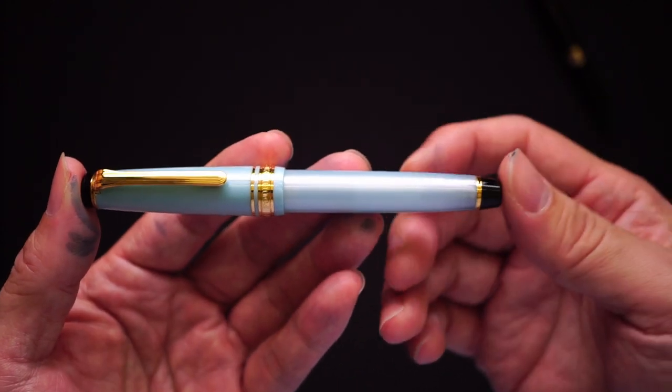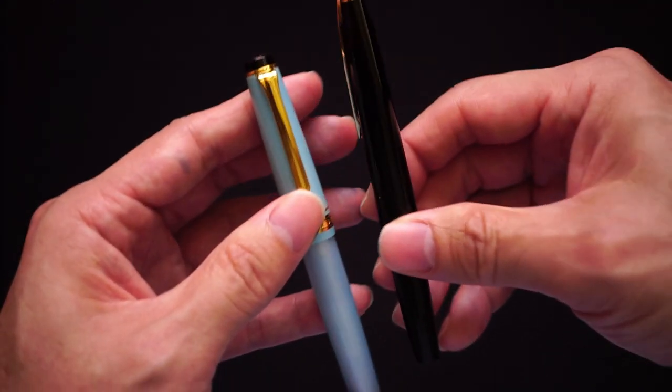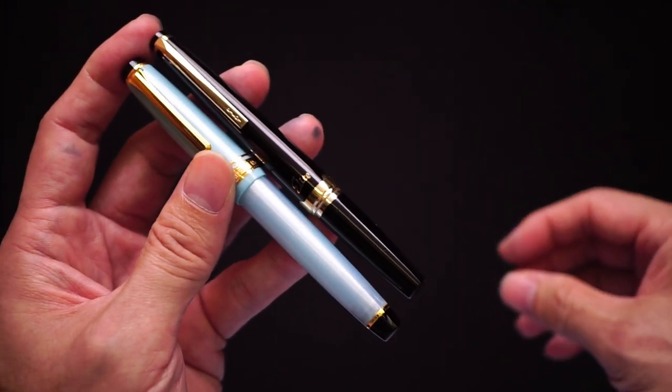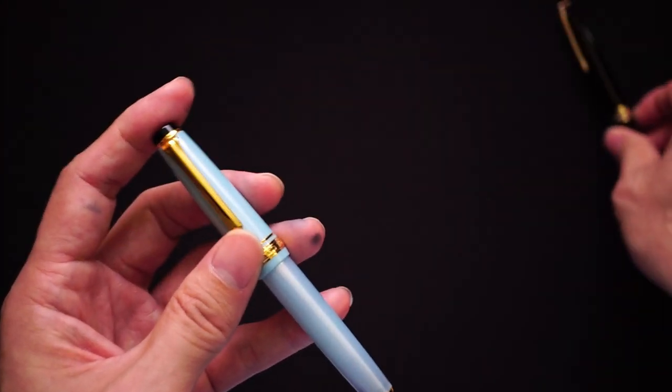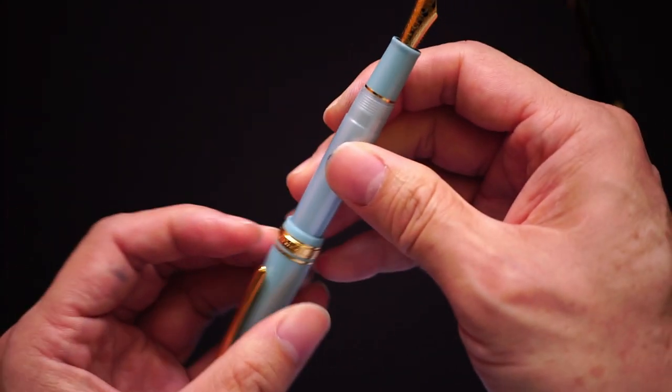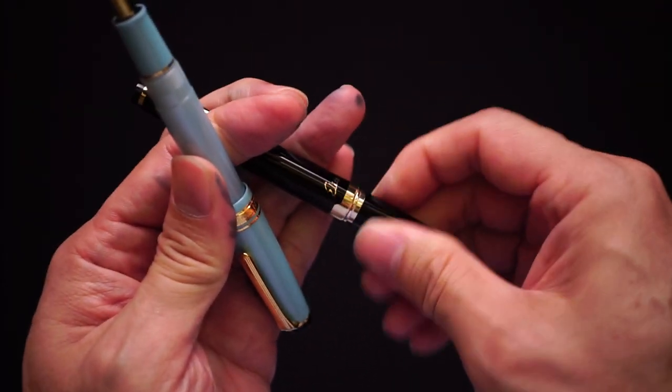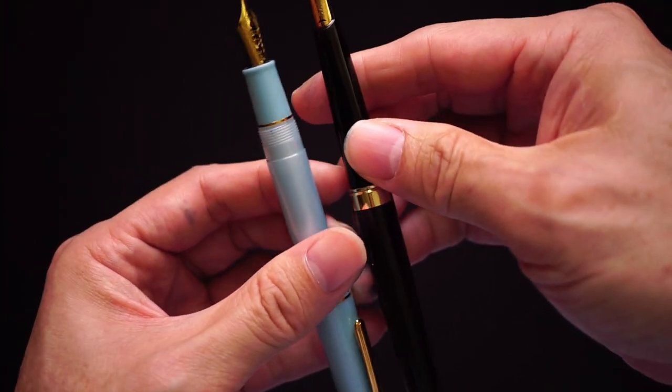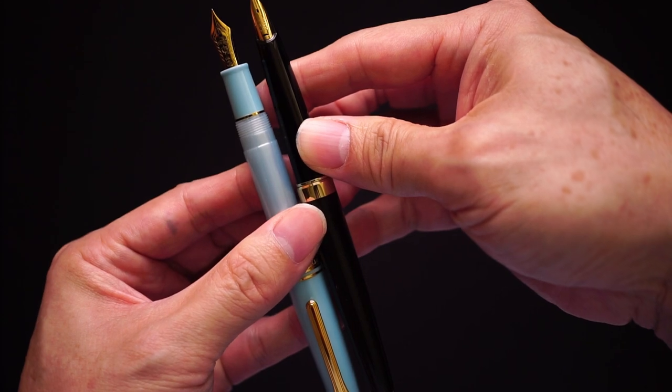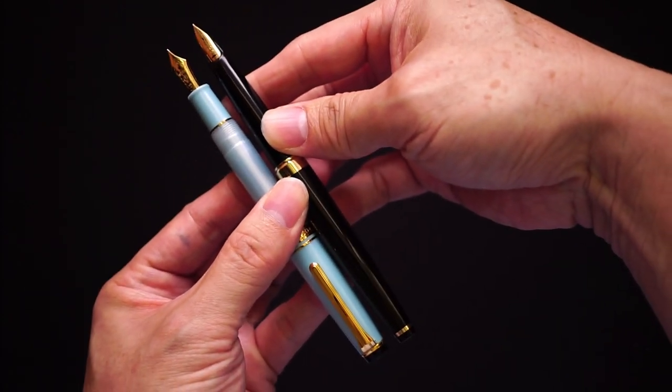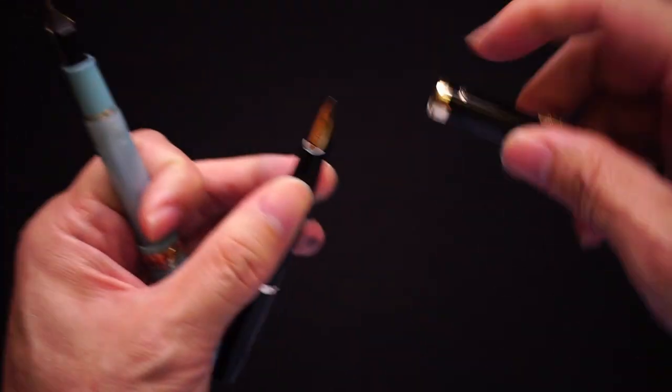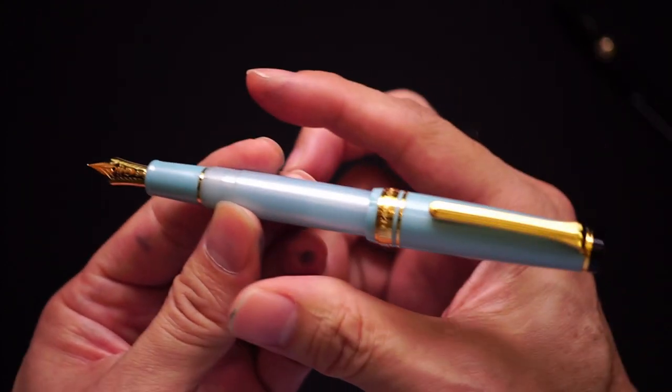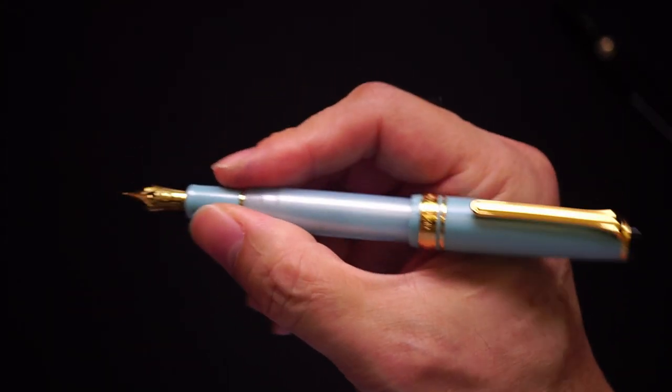Second point is this pen is very small. If you compare this with my Elite, it's not much longer than the Elite when closed. And even when posted, the Elite which is the same size when closed ends up to be slightly longer or roughly the same size. It's a very small pen, the Pro Gear Slim. It's probably more suited I feel for ladies, which is probably why it's my wife's pen and not mine.